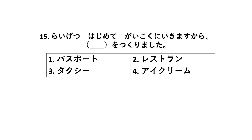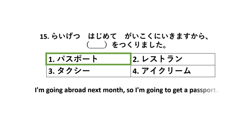Number 15: Raigetsu hajimete gaikoku ni ikimasu kara, [blank] o tsukurimashita. The appropriate word is pasupoto — passport. I'm going abroad next month, so I'm going to get a passport.